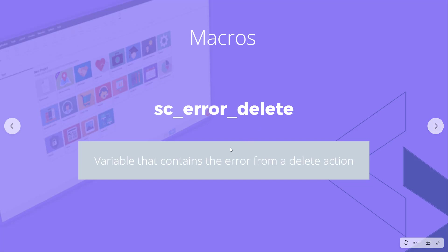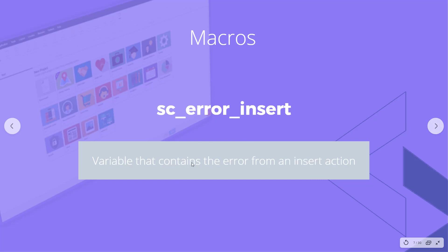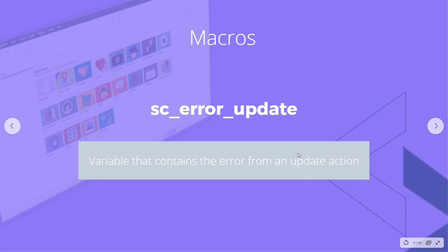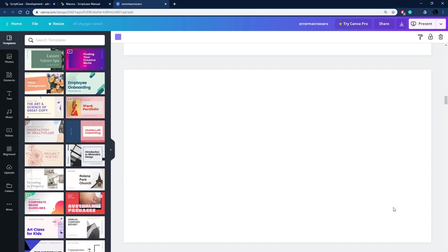Then we have some variables: sc_error_delete contains an error when there was an error from a delete action, sc_error_insert contains the error from an insert action, and sc_error_update contains the error from an update action. We're going to use all of these in an application to control our own error messaging within Scriptcase.